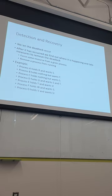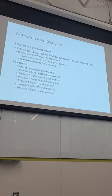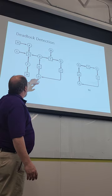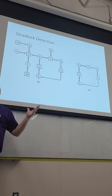Detection and recovery: let deadlocks occur, then test to see if one is currently happening. After it's detected, do something about it. Options include: forcing a resource away from a process if they're preemptible, or just killing a process — which breaks the cycle. Then respawn that process later by putting it back in the ready queue.